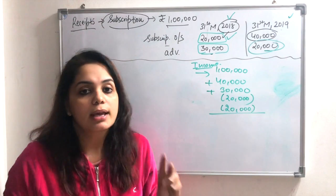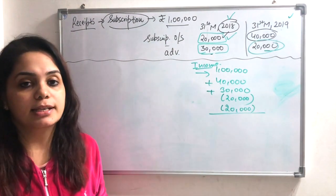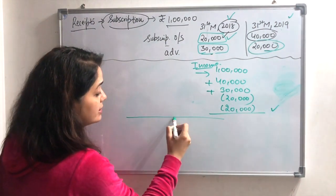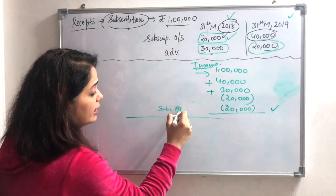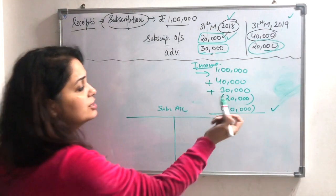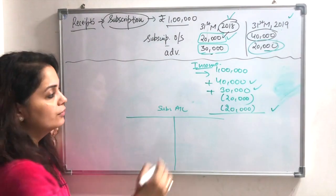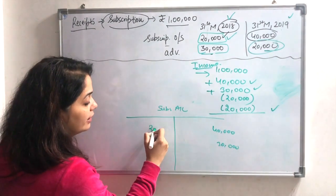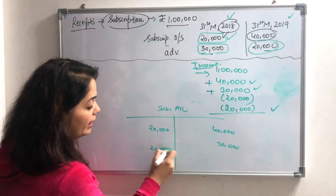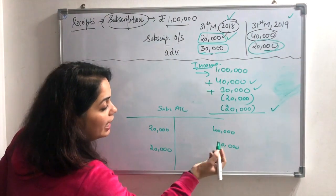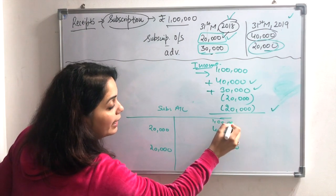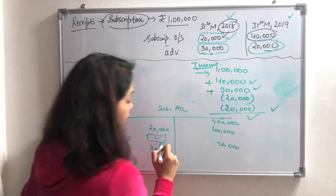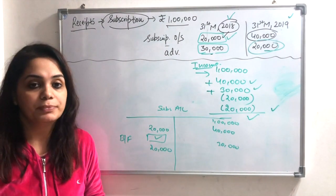Now my amount is here. Now how do I make a subscription account? A small trick I have: the amount which I have plused, I will write here 40,000, 30,000, and which I have minused, I will write here debit side. And this is also plus, so this will come by balance, and balancing figure will come here.